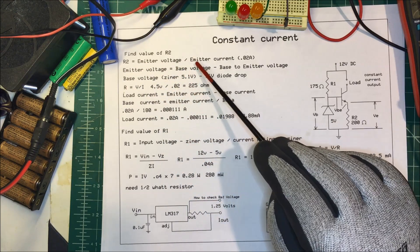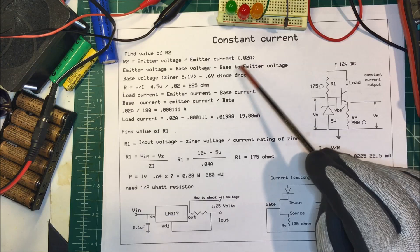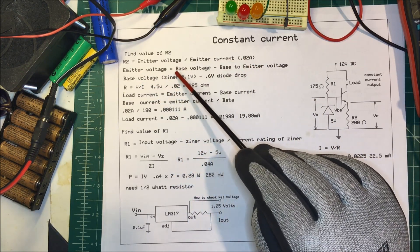R2 is going to be equal to the emitter voltage divided by the emitter current. We're going to pick 20 milliamps because we're going to run some LEDs with it.